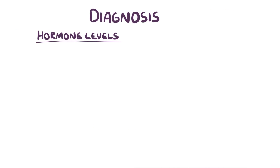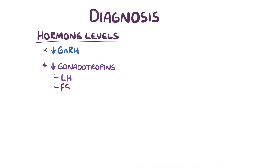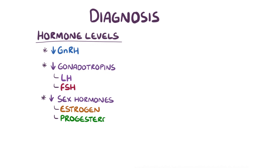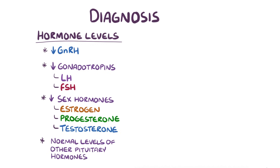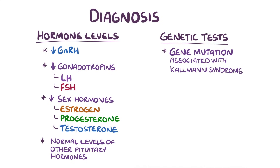A diagnosis of Kallmann syndrome is made based on identifying low levels of gonadotropin-releasing hormone, low gonadotropins — LH and FSH — and low sex hormones — oestrogen, progesterone, and testosterone — and this is all with normal levels of other pituitary hormones. Genetic tests for known gene mutations associated with Kallmann syndrome can also be done. Finally, there's usually an abnormal smell test and sperm count as well.